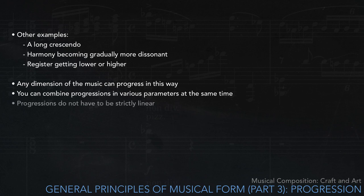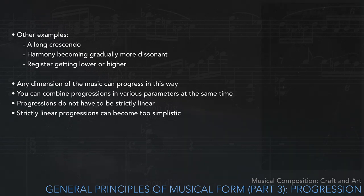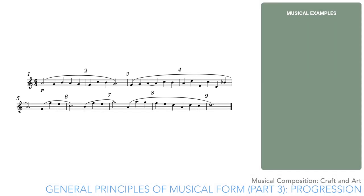Note that progressions don't have to be strictly linear. In fact, strictly linear progressions can become too simplistic, too obvious. For example, between the D in measure 4 and the F in measure 5 of the above example, there's a distance of a third. This is not big enough to feel like a change of register, and therefore the F still feels like part of the same progression.